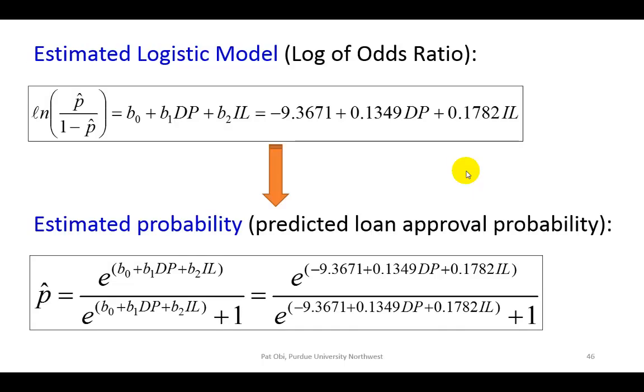Now, moving forward, the task ahead of us is to transition from the estimated logistic function here to probabilities for different levels of independent variables, DP and IL.